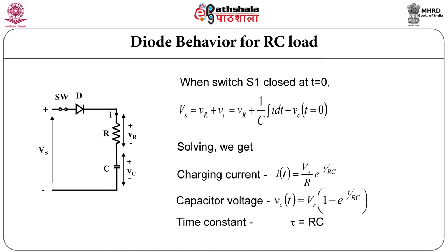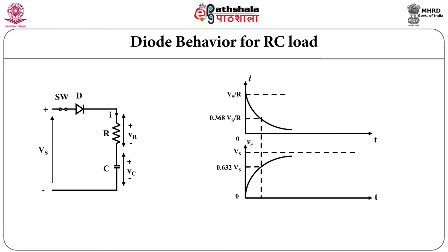At t equals 0 switch is closed. You will observe that current is maximum at t equals 0 and voltage across capacitor is 0. As time passes, current is decreasing at a faster rate and voltage is increasing at a faster rate. Afterward current will reach 0 and voltage will reach the supply voltage. In one time constant, voltage will reach 63 percent of the maximum. Mathematically you can prove this by KVL: V_s equals voltage across diode plus I*R plus (1/C) integral of I dt.